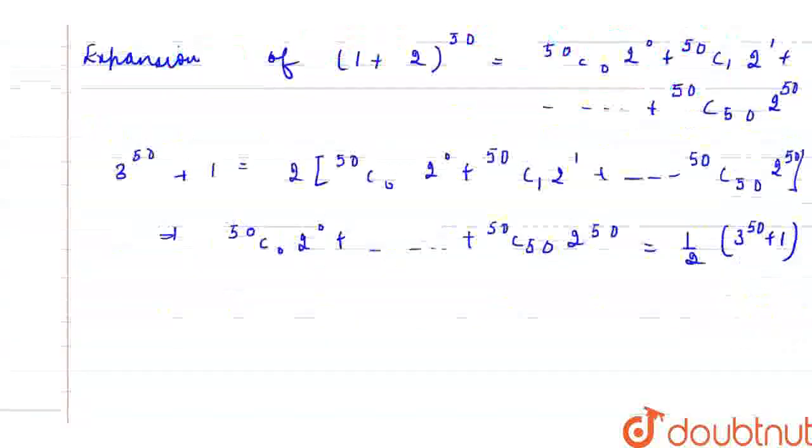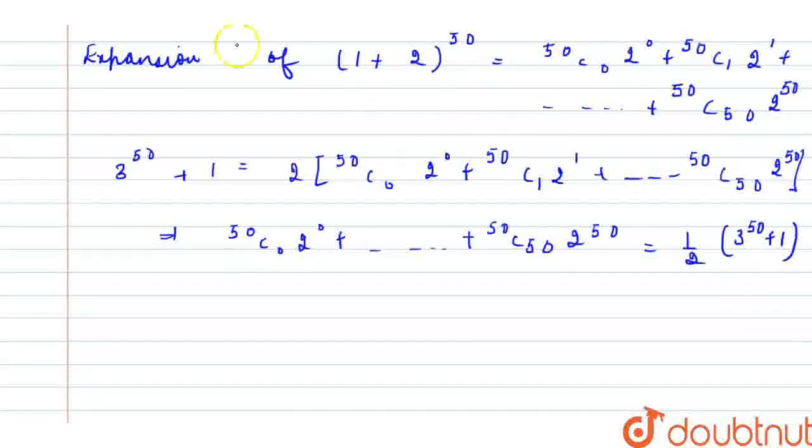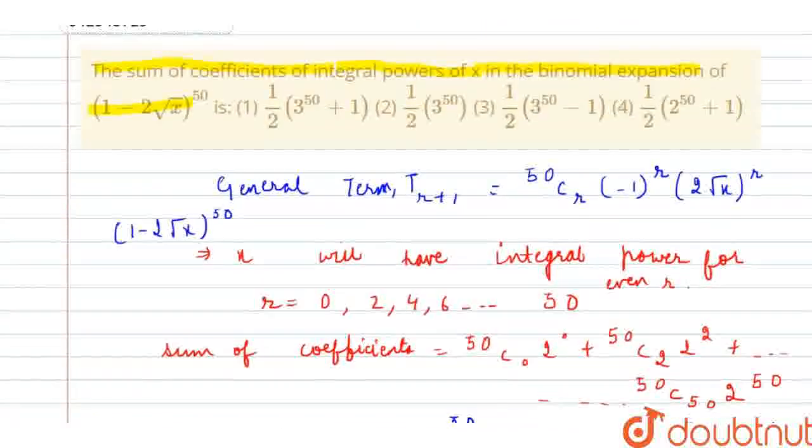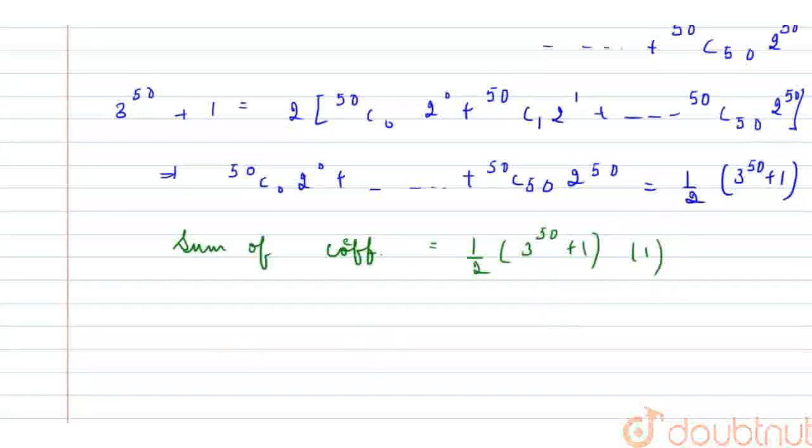So, therefore, what is the sum of coefficients? Sum of coefficients is equal to half of (3^50+1). Let's see which of the following options is the correct option. So, it means that option 1 is the correct option. I hope it is clear. Thank you.